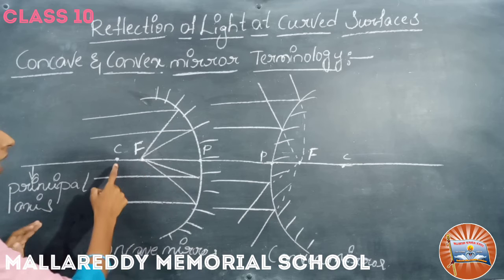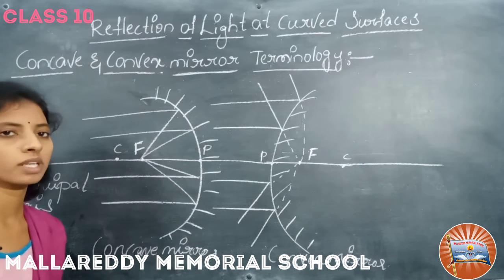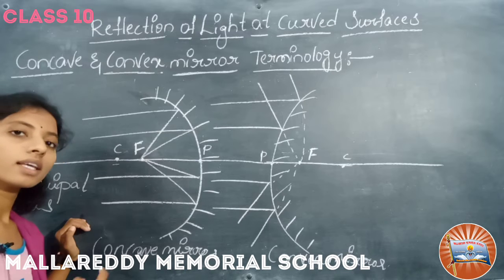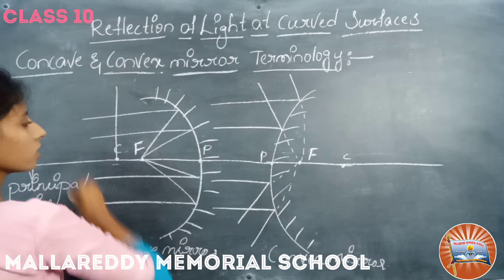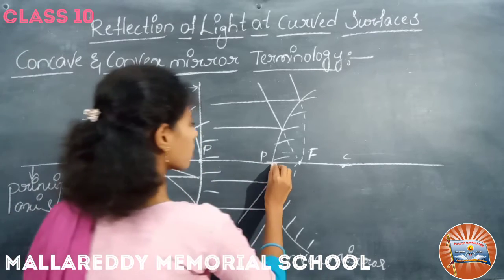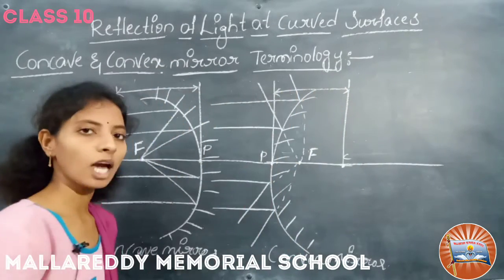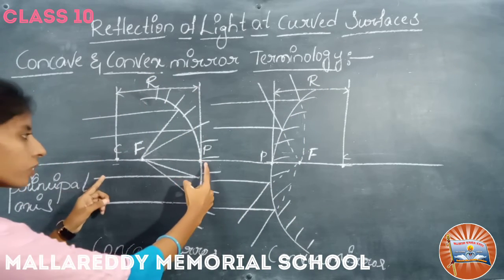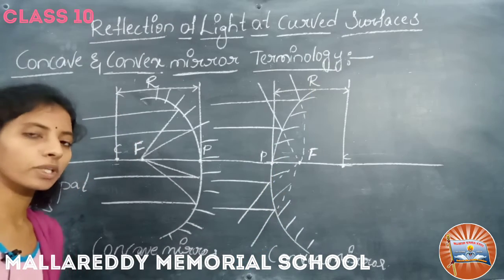We have the center of curvature, principal focus, and pole on both concave and convex mirrors. The distance between the pole and the center of curvature is known as the radius of curvature, and it is denoted by capital R.